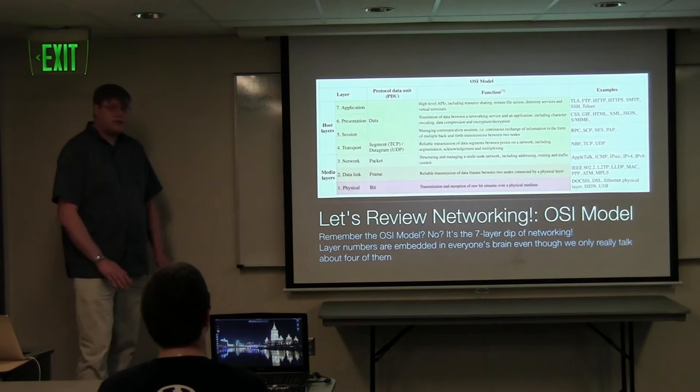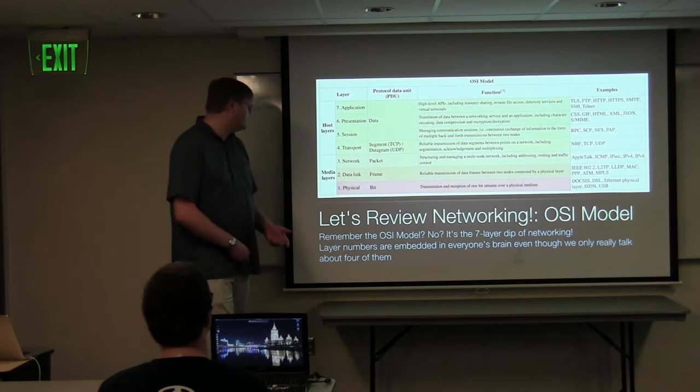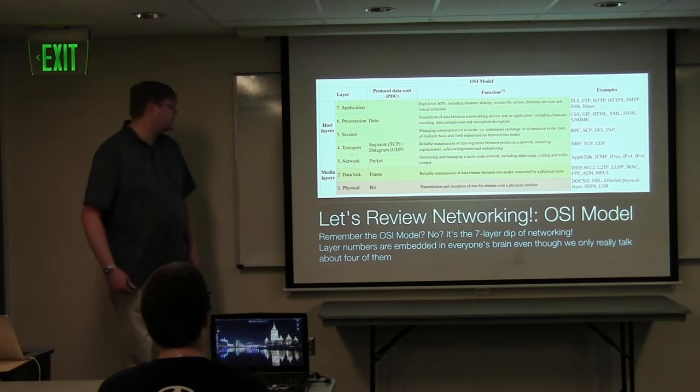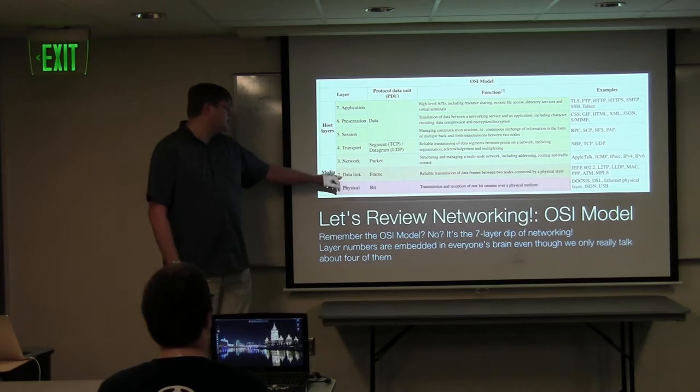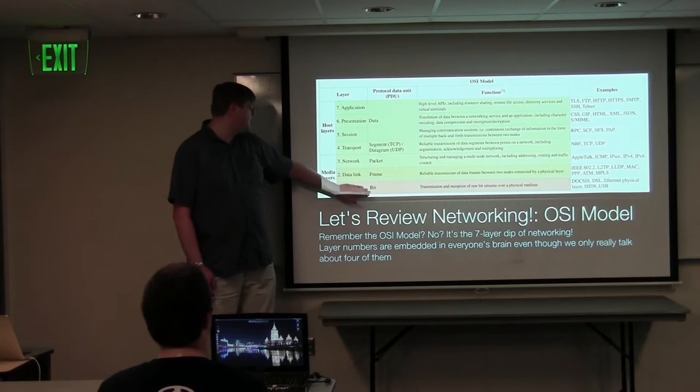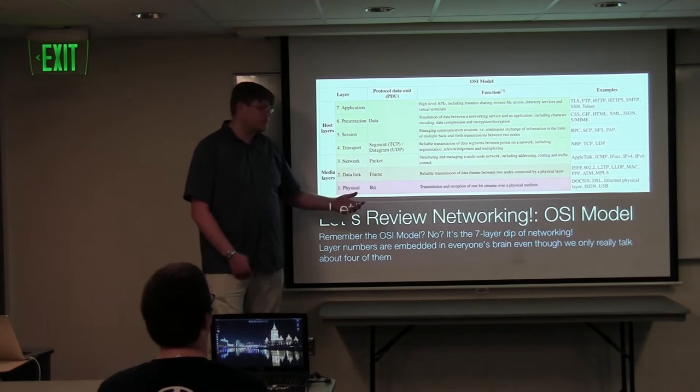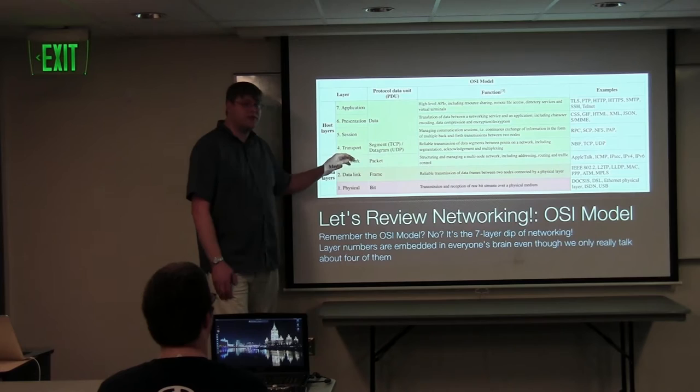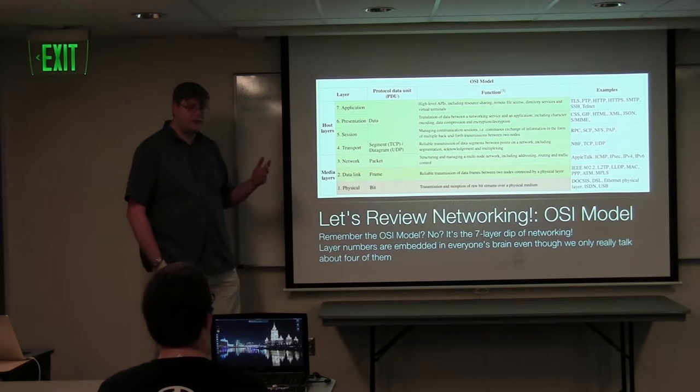Before we talk too much about tunneling, I want to make sure everybody knows what I mean when I say layer 2 and layer 3. The OSI model — they used to teach it to death. We don't really use all seven layers. Physical, link, network, and then the rest is application and transport. You get TCP and UDP. Layer 2 is Ethernet, with MAC addresses. Layer 3 is IP or IPv6, IP addresses. Layer 4 is usually UDP or TCP. Layer 7 is whatever you're actually doing with the network connection, whether it's HTTP or SMTP.